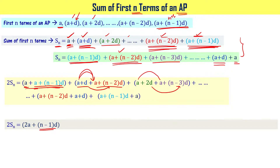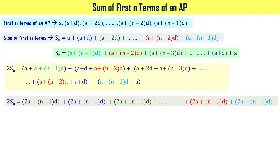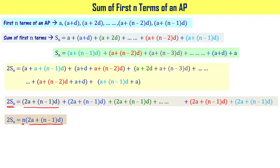Each pair gives 2a plus (n-1)d. Since there are n terms in the series, there are n such pairs. Therefore 2Sn equals n times [2a plus (n-1)d], which gives Sn equals n divided by 2 times [2a plus (n-1)d].